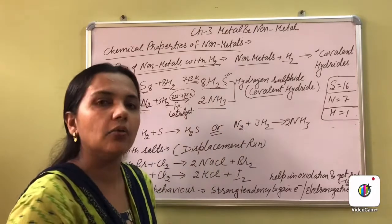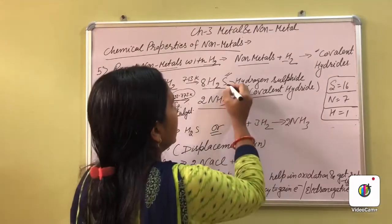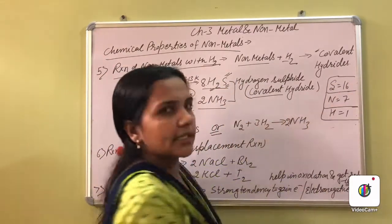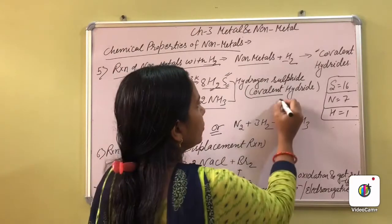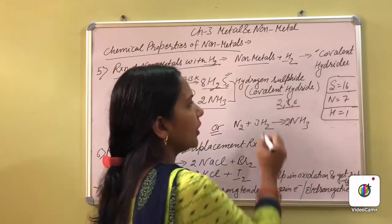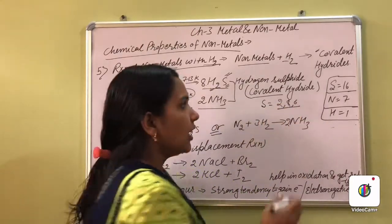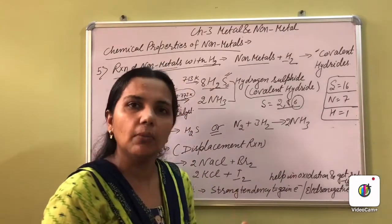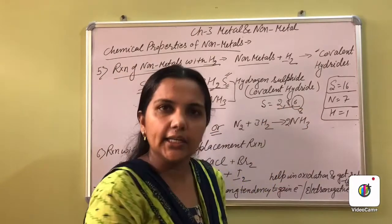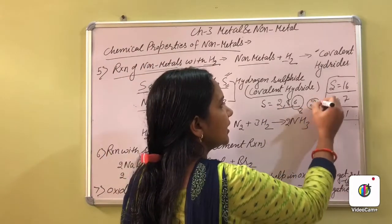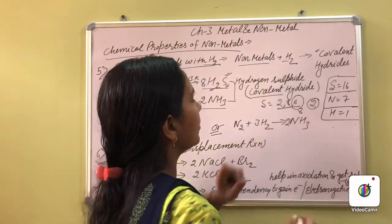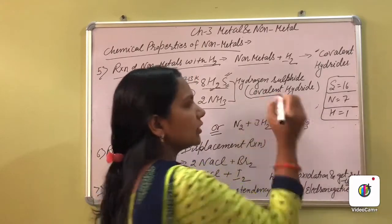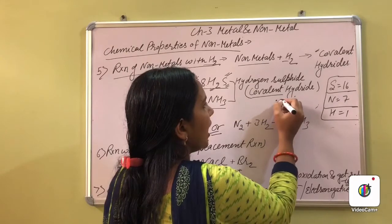Let's see how these are covalent hydrides. Let's take the example of hydrogen sulfide first. The atomic number of sulfur is 16. The electronic configuration of sulfur is 2, 8, 6. The outermost shell of sulfur has only 6 electrons, and we draw the electron dot structure of sulfur showing those 6 electrons in the outermost shell.